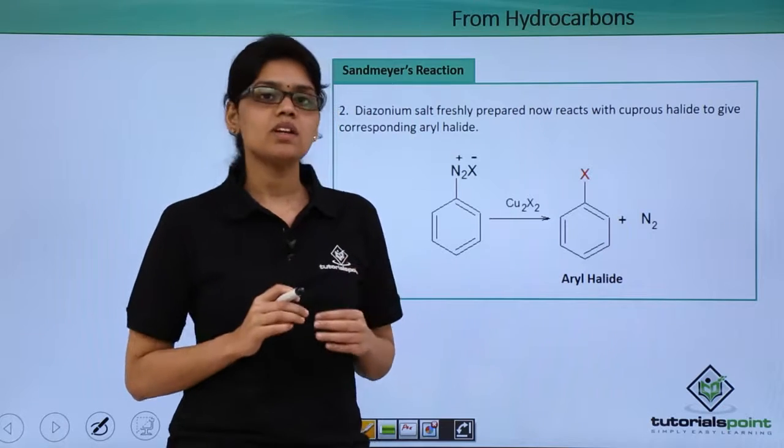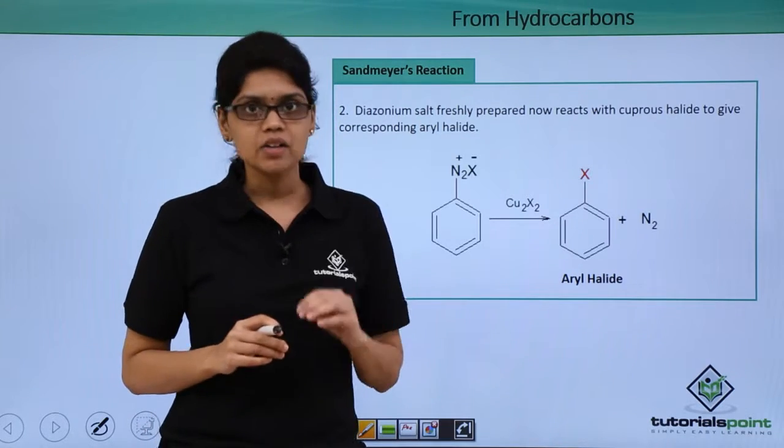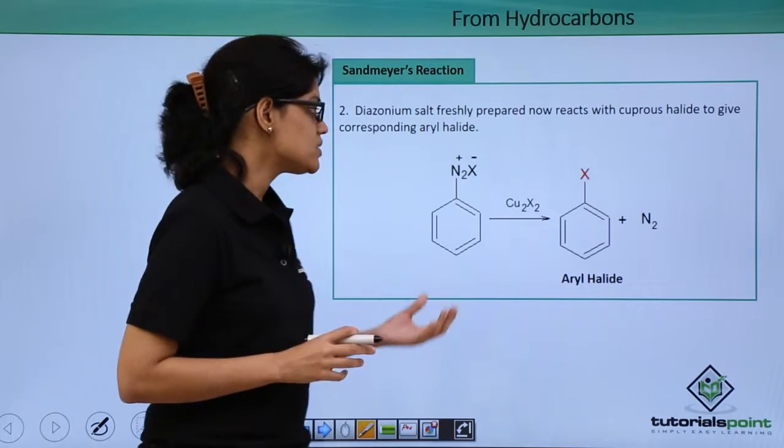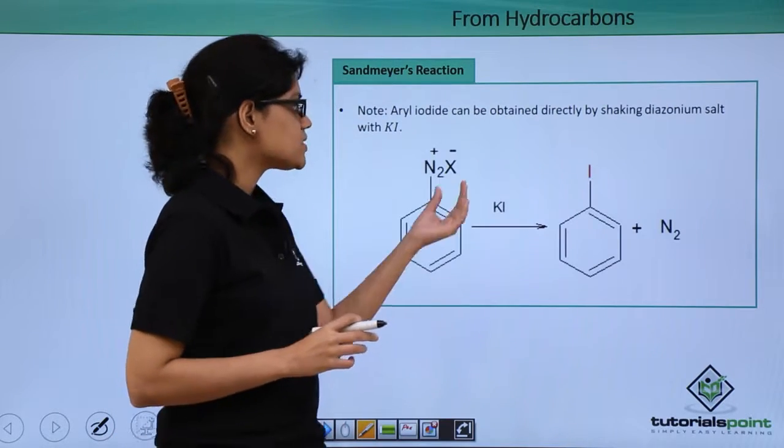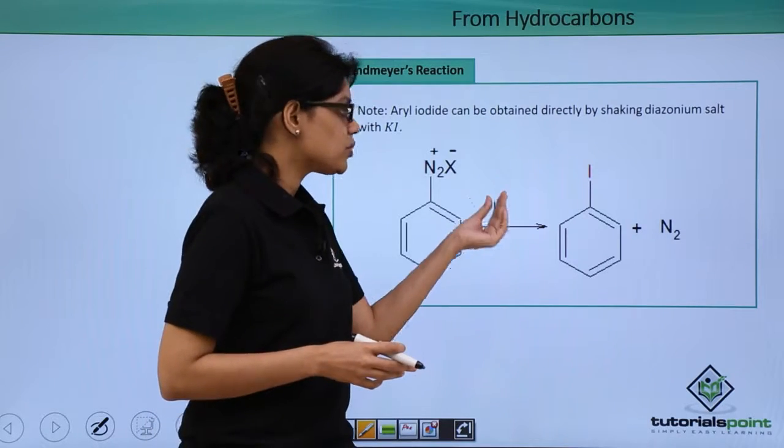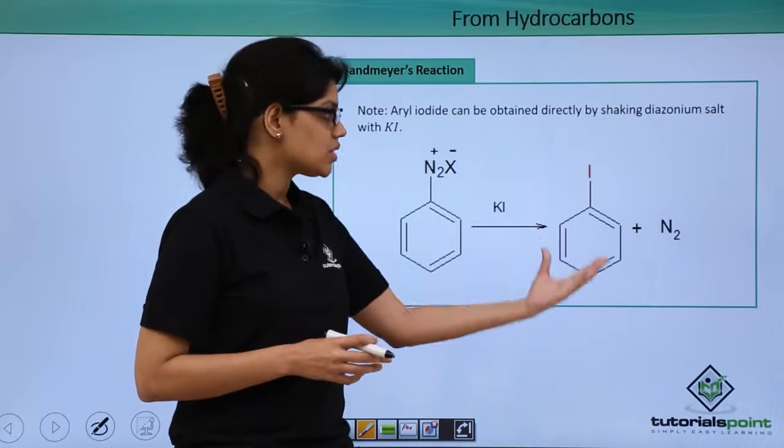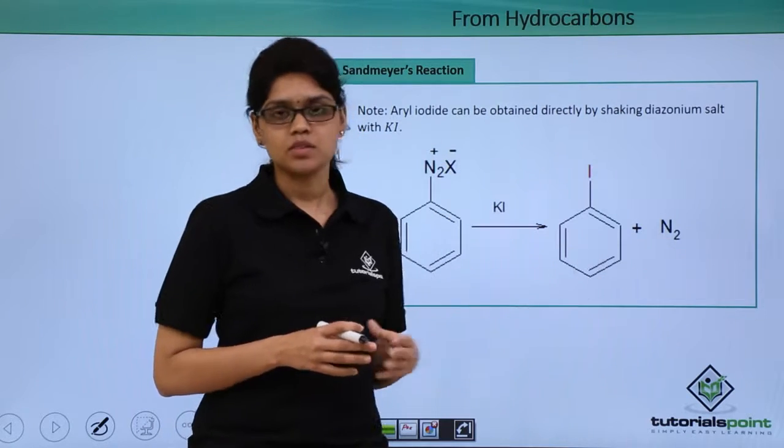This particular method is especially favourable for the synthesis of aryl iodide. All we have to do is take the diazonium salt and simply shake it with potassium iodide where I- from the potassium iodide displaces N2+X- group and gives us aryl iodide and nitrogen.